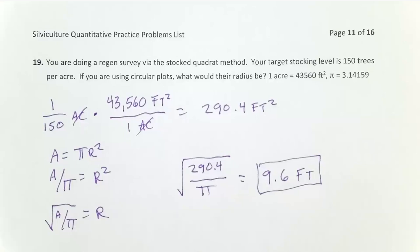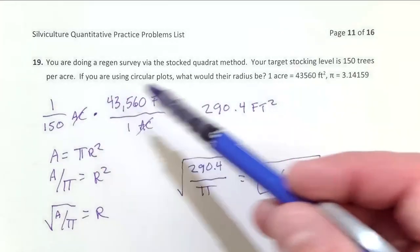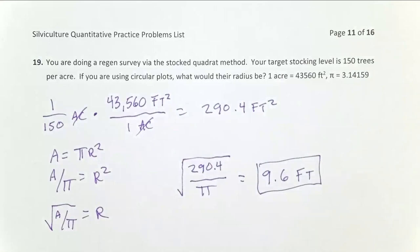So that's how you calculate the radius of a stocked quadrat plot if all you're given is how many trees per acre you desire to be stocked at.